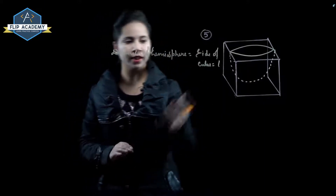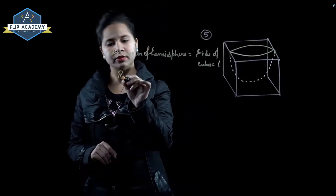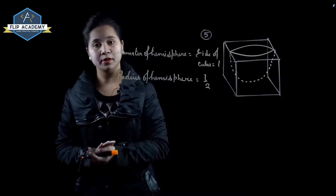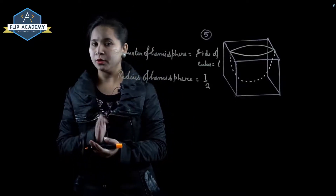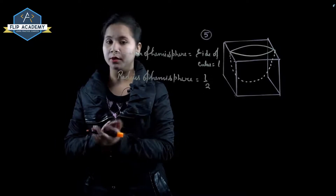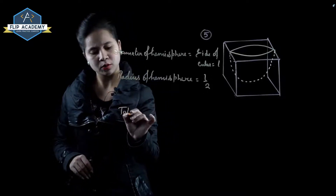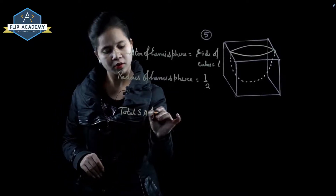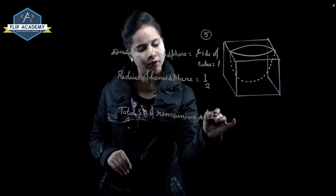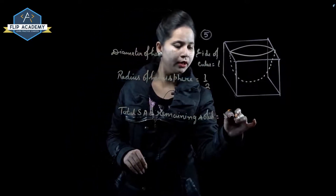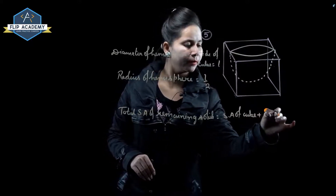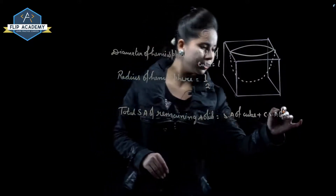Radius of hemisphere equals l upon 2, because diameter equals 2 times radius, so radius equals diameter upon 2, which is l upon 2. Total surface area of remaining solid equals surface area of cube plus curved surface area of hemisphere minus base area of hemisphere.